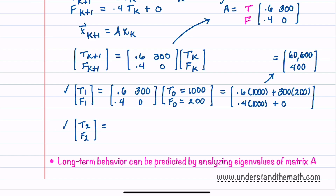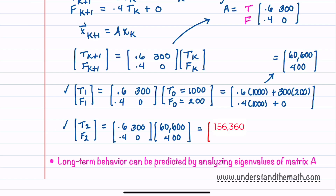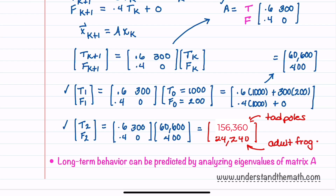Now let's determine the number of tadpoles and frogs after the second year. We compute x_2 = A * x_1, using the same matrix A and x_1 = [60,600; 400]. After performing this multiplication we get the number of tadpoles and adult frogs at year two. Later in this course, we'll be able to predict the long-term behavior of this linear system by analyzing the eigenvalues of matrix A.